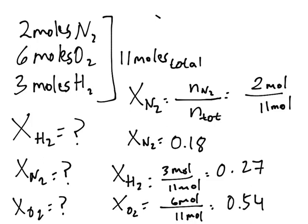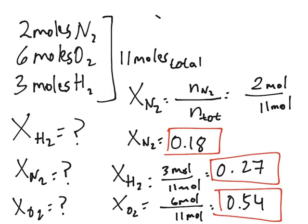And those are our results: 0.18, 0.27, 0.54. And it makes sense that for oxygen it's higher than for nitrogen and hydrogen, and that for hydrogen it's higher than for nitrogen.